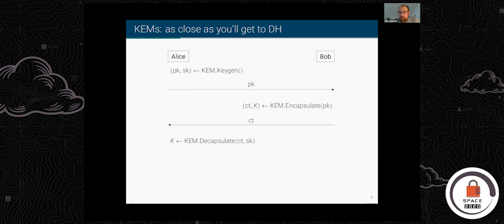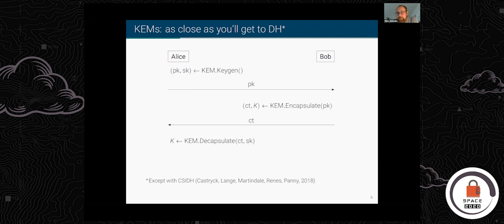In a KEM setup, the encapsulation needs to know the public key, so Bob can only send after he has received Alice's public key. The non-interactive characteristic of Diffie-Hellman is lost — you get an inherently interactive procedure where one party must wait for input from the other. In the title I said lattice-based KEMs are 'as close as you can get to Diffie-Hellman in a post-quantum world.' That's slightly a lie — there is one proposal you could use as a drop-in replacement with non-interactive behavior, called CSIDH.